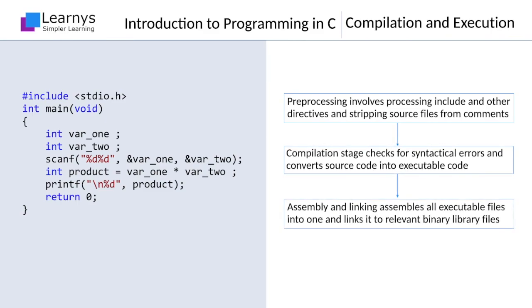The assembly and linking stage assembles all the created binary files into one file and generates a single executable file. During this stage, the binary versions of other relevant library files are also linked to the generated executable file. These three stages convert a program into an executable program.